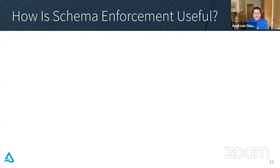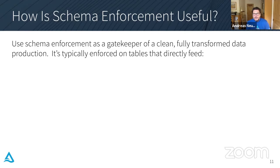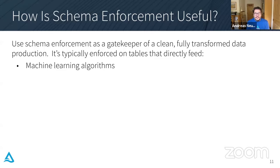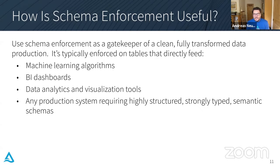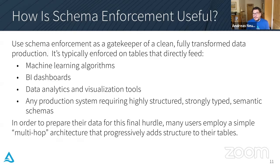So that was schema enforcement. Why is it useful? It's needed any time you run production systems that really depend on the fixed structure of the data they're reading — machine learning algorithms, BI dashboards, data analytics and visualization tools, and any production system that expects a highly structured and strongly typed schema. To handle this, a lot of people build pipelines that employ a multi-hop approach: the first hop ingests raw data, the next filters out bad data, and the next canonicalizes the schema so that the gold tables all conform to the expected schema.